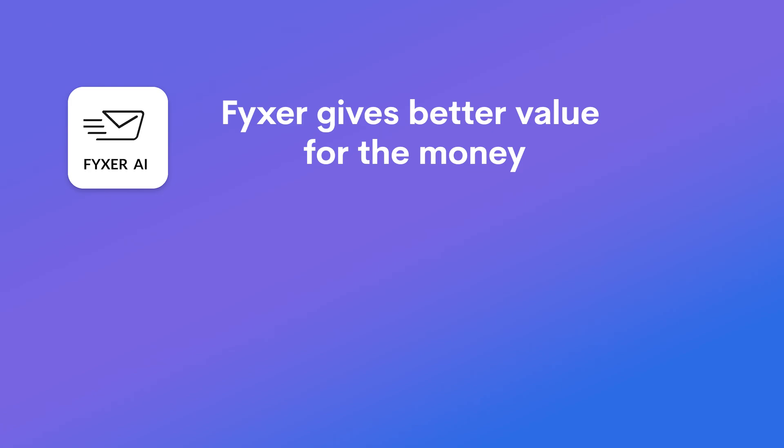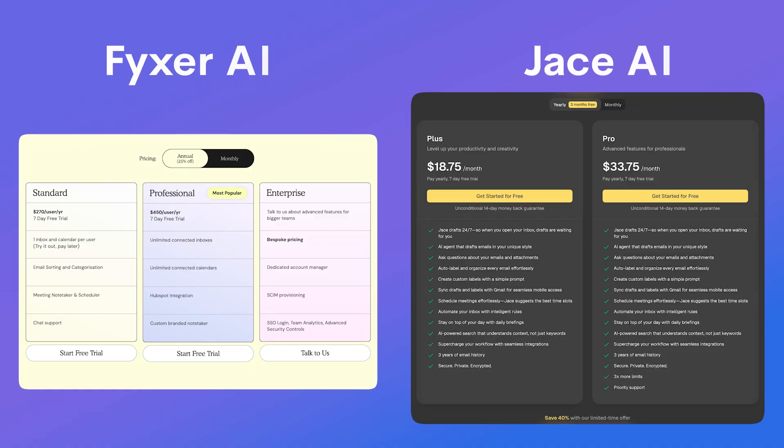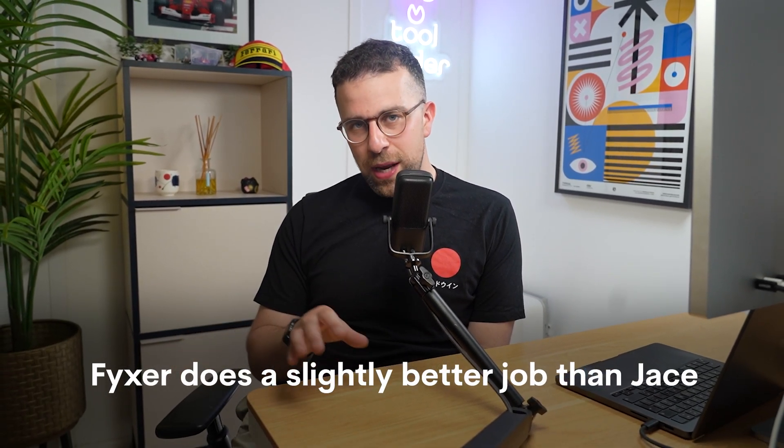All in all, Fixer offers better overall value for money. If you're on a tighter budget and just want an email assistant, the basic plan on Jace is the way to go. However, paying the extra ten dollars — or potentially less on annual pricing — gets you Fixer, which does a better job with AI-assisted replies, the scheduling link feature, and AI meeting notes. My overall opinion is that Fixer does a slightly better job than Jace right now, though both apps will likely change rapidly as AI accessibility accelerates.